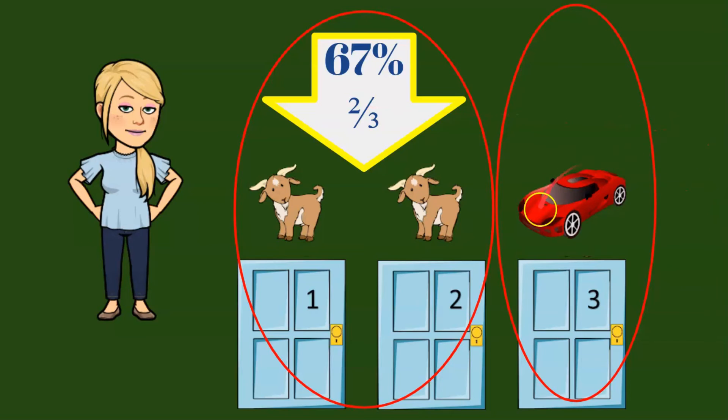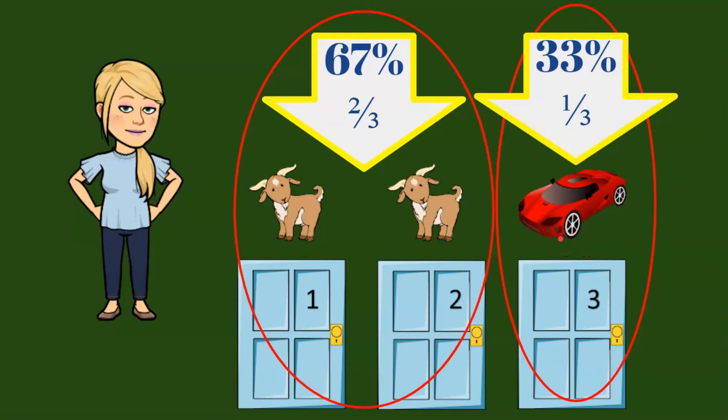There was one door, door number three, that had the car. So I had a 33% chance of picking the car, a one out of three chance.